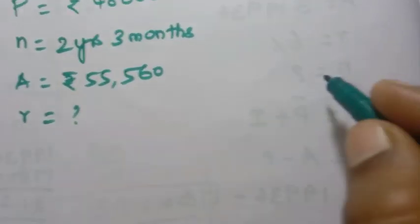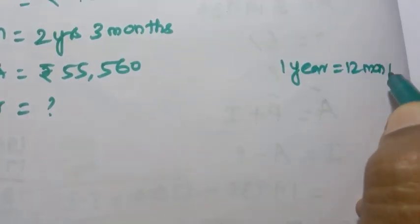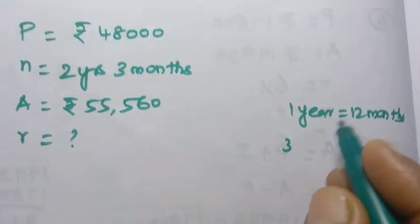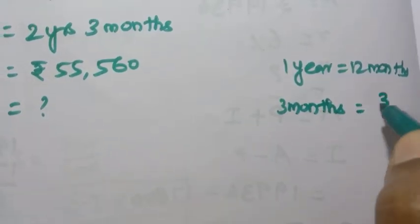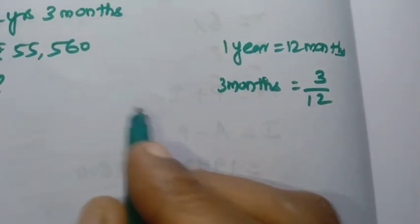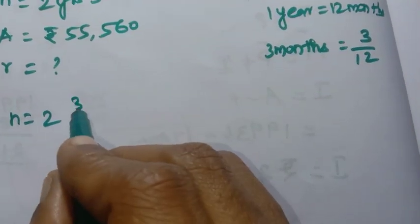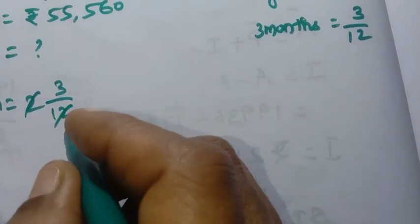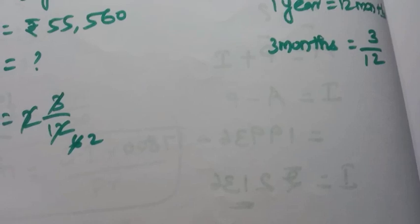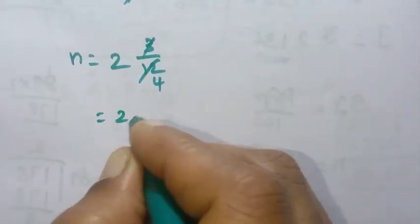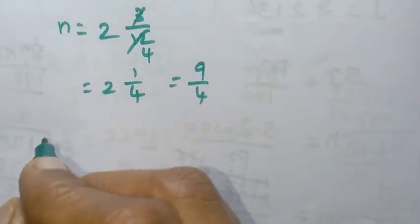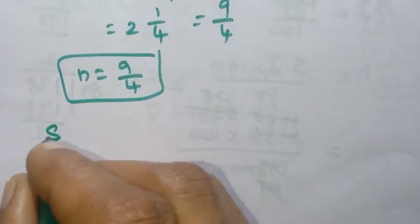Converting 2 years 3 months: 1 year = 12 months, so 3 months = 3 by 12. N = 2 and 3 by 12 = 2 and 1 by 4. As an improper fraction: 4 times 2 = 8, plus 1 = 9 by 4. So N = 9 by 4.